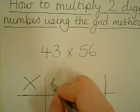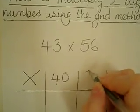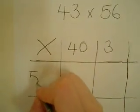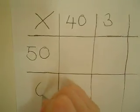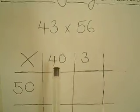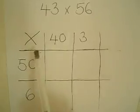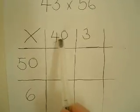The first thing I'm going to do is break them down into tens and units and place them on the grid. So 40 and the 3 and the 50 and the 6. And the next thing I need to do is multiply each number by every other number.